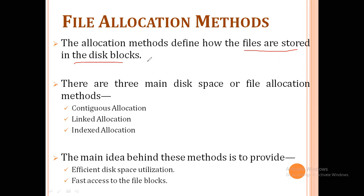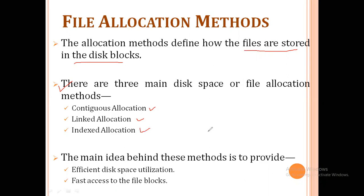In many cases, there are many types of files stored on the same disk. The main problem that occurs in the operating system is how to allocate spaces to these files so that the utilization of disk is efficient and quick access to the file is also possible. So there are mainly three types of file allocation methods: contiguous allocation, linked allocation, and index allocation.